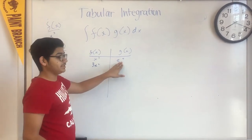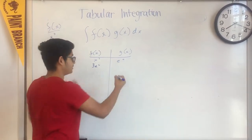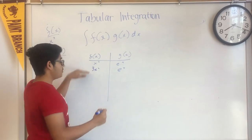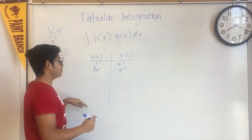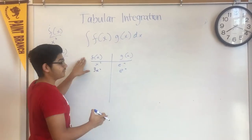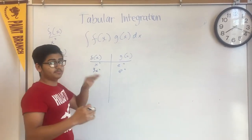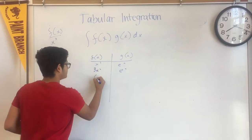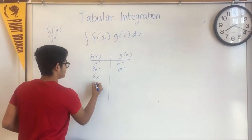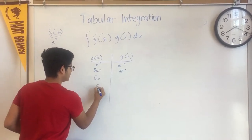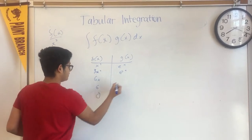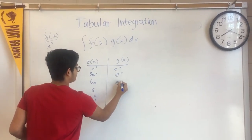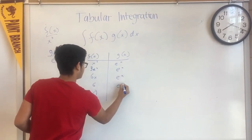Then we're going to integrate e to the x, which is just going to remain e to the x. We're going to go down until the derivative of f becomes zero. So: 3x squared, then 6x, then 6, and then zero. The integral of e to the x is going to stay the same throughout.